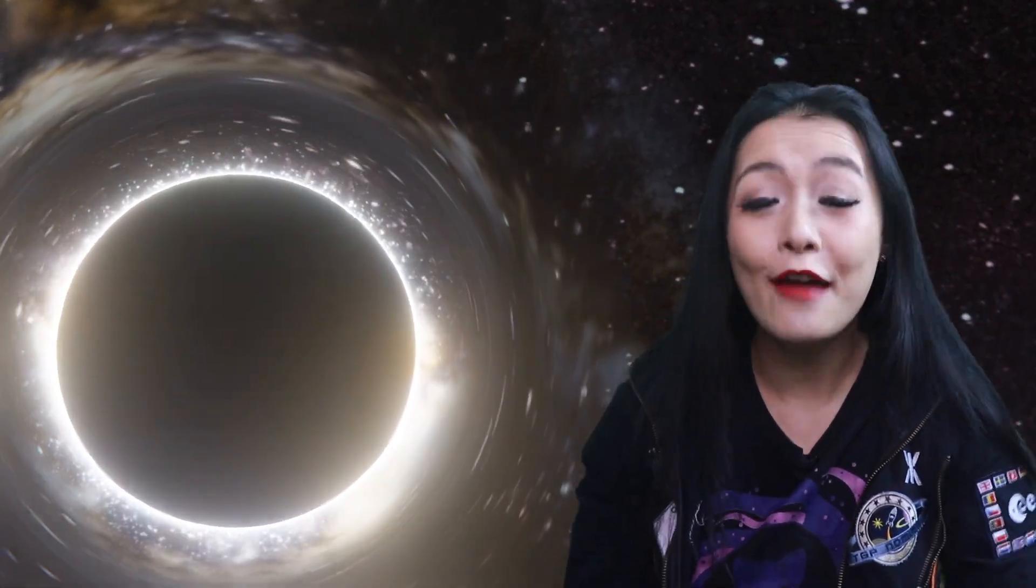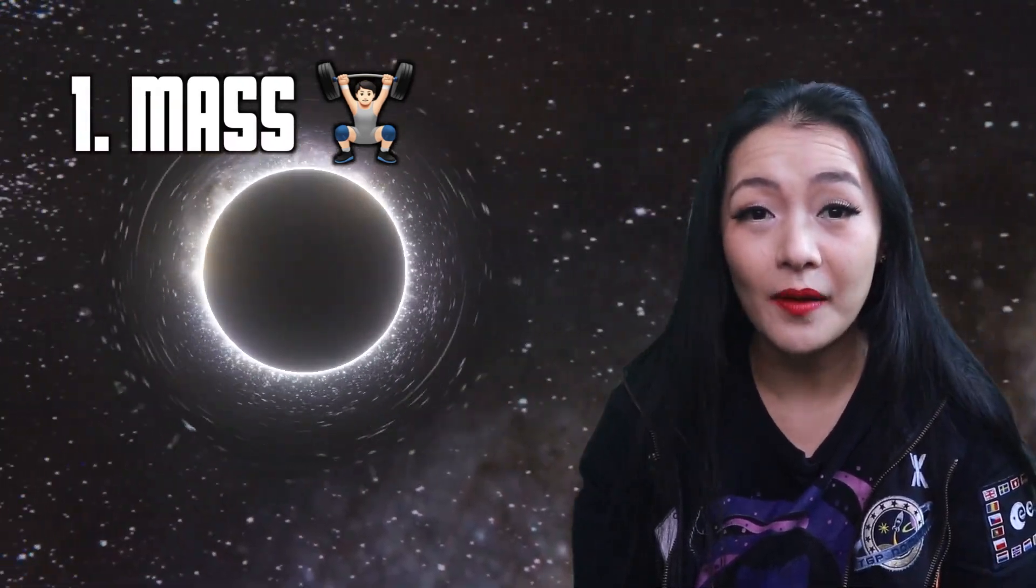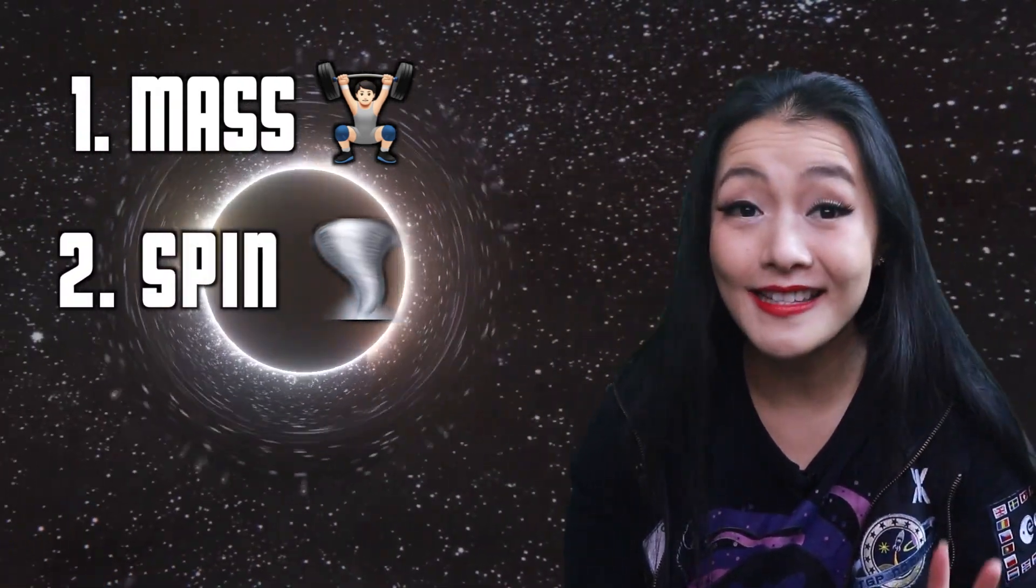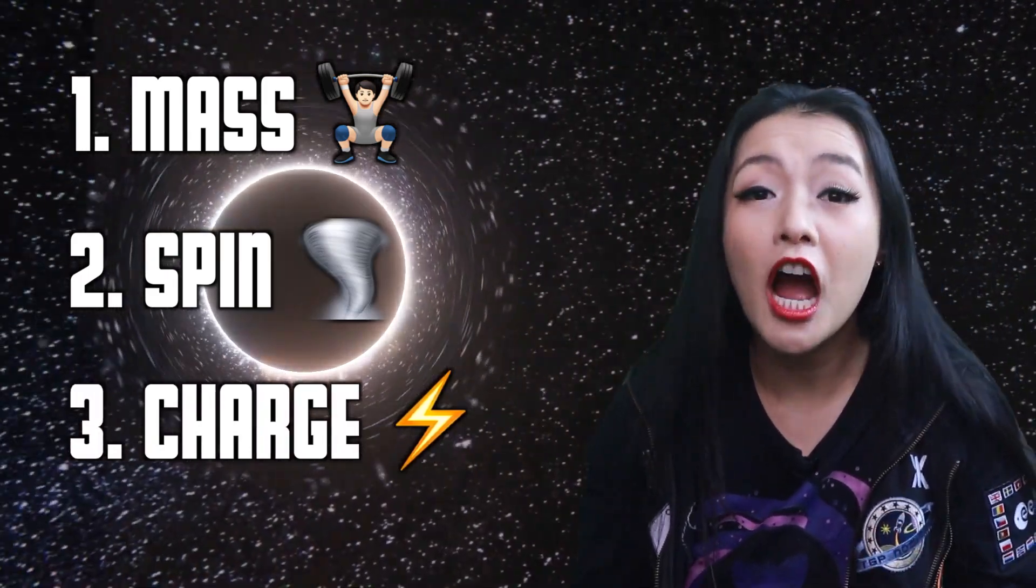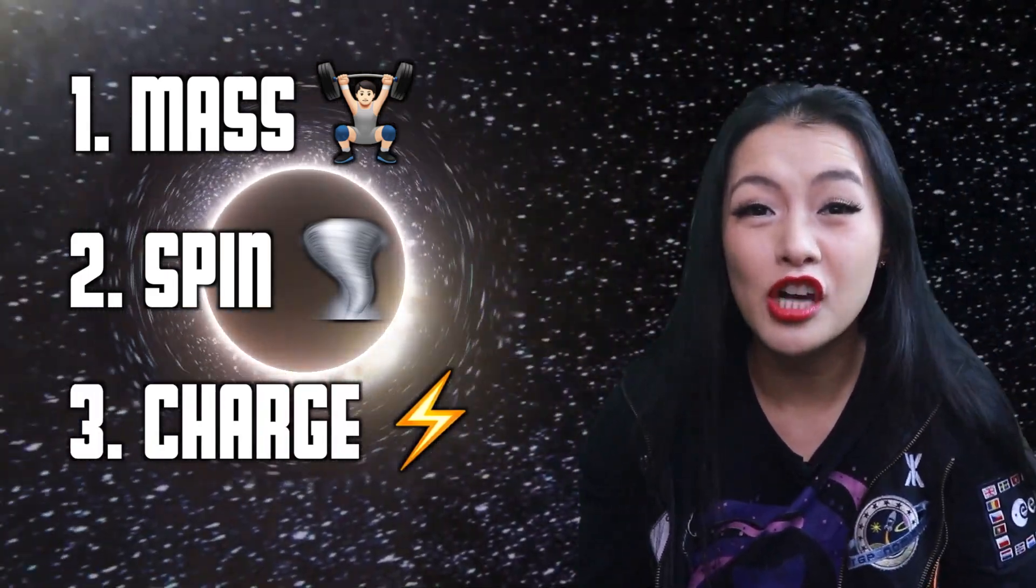Today, in the case of black holes, there are only three physical parameters that we need to describe every single black hole. Firstly, how massive they are. Secondly, how fast they spin. And thirdly, how much charge they carry, like electron charge.